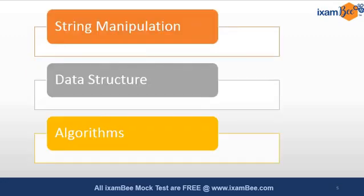You need to understand how to approach each section. First, gain command over string manipulation — it is an individual topic where you can manipulate strings without knowing data structures or algorithms. If your background in those two areas is weak, start with string manipulation first. Then move to data structures, and finally to algorithms, practicing moderate-level questions to strengthen that part.